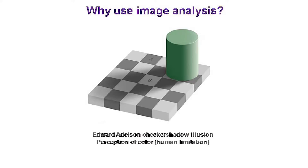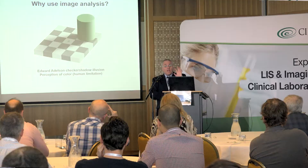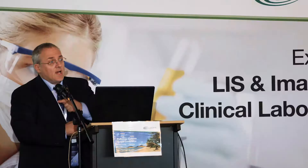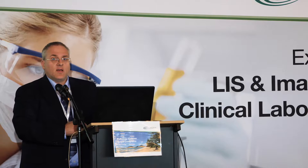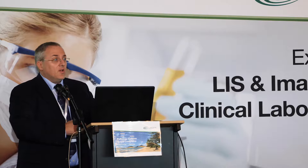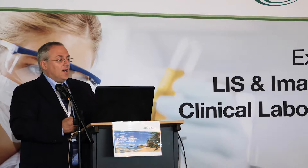We have limitations as humans. The Edward Adelson checker shadow illusion is well known: block A and block B on that checkerboard are exactly the same color — your brain is playing tricks on you. If you asked a computer to analyze A and B, it would correctly identify they're the same color. That's a problem for us in pathology when we're looking at brown and red stains and have to score intensity; we're not given the same yardstick to provide those measurements, and that's a big problem.